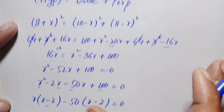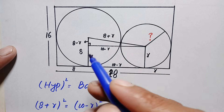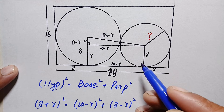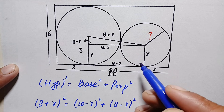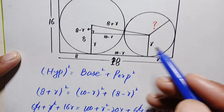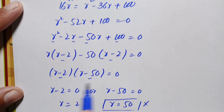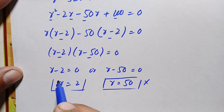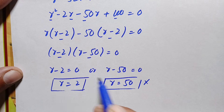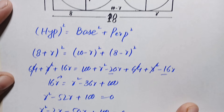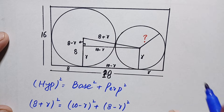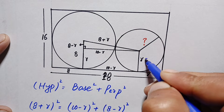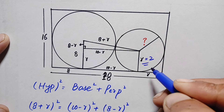Here r equals 50 is not possible, because the radius of the bigger circle is 8 units, so the smaller circle must have a radius smaller than 8 units. Therefore r equals 2 is the correct value. The radius of the smaller circle is 2 units, and that is our final answer. Thank you.